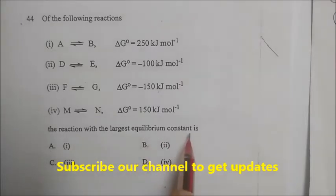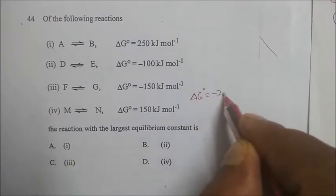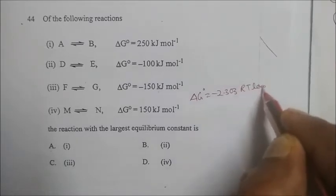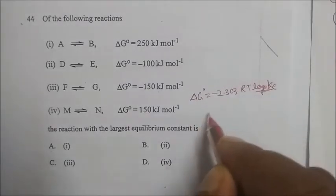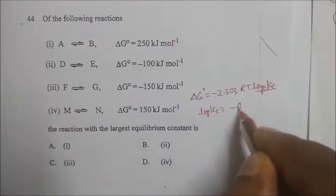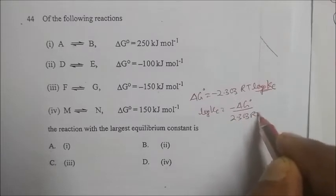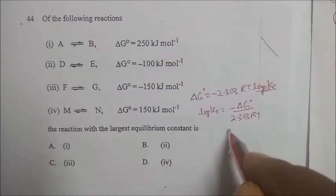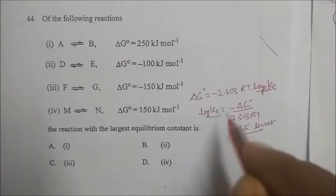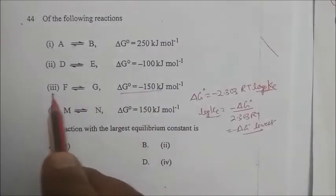These are equilibrium reactions and we need to find the one with the largest equilibrium constant. Using the formula ΔG° = -2.303 RT log Kc, we get log Kc = -ΔG°/(2.303RT). When ΔG° is the most negative (lowest value), K is highest. The lowest ΔG° value is option C, so the equilibrium constant for that equation is highest.